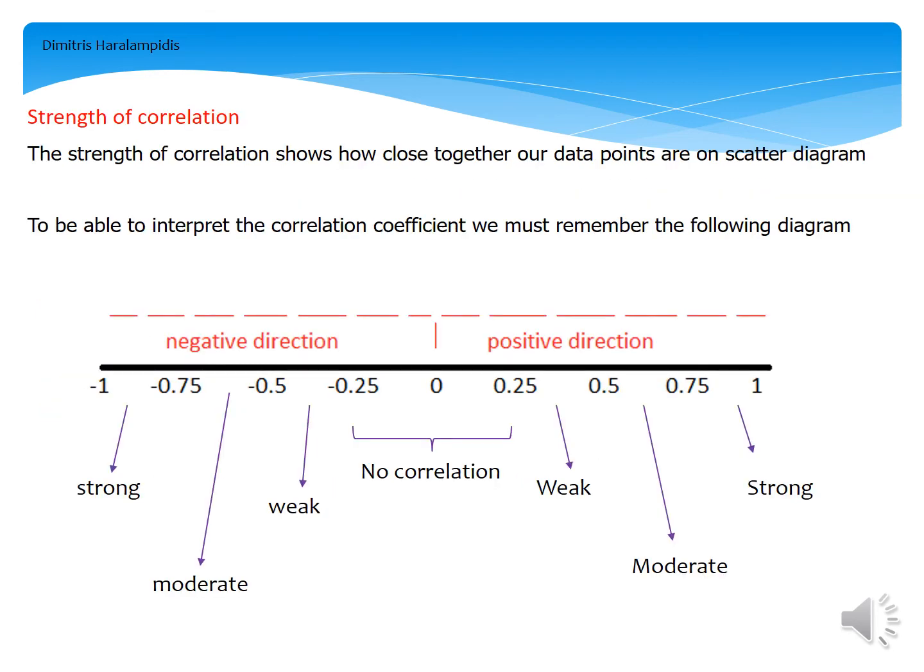Now let's see what we mean by strength of correlation. The strength of correlation shows how close together our data points are on the scatter diagram. To be able to interpret the correlation coefficient, we must remember the following diagram.